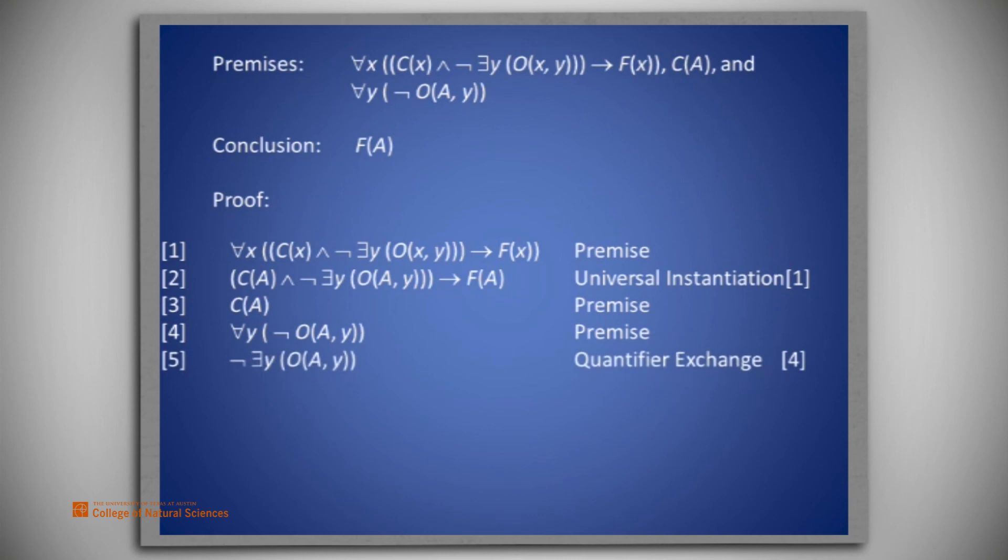That brings the not to the front and swaps the universal quantification to an existential quantification. Thus on line five, we have exactly the antecedent that we need to use in line two. So on line six, let's place the conjunction of lines three and five to get C(A) and not there exists y, such that O(A, y).